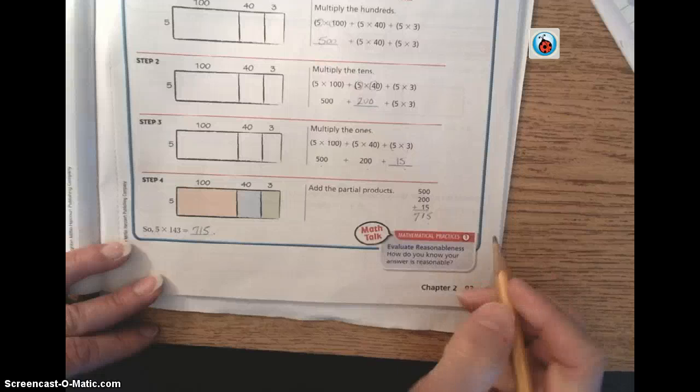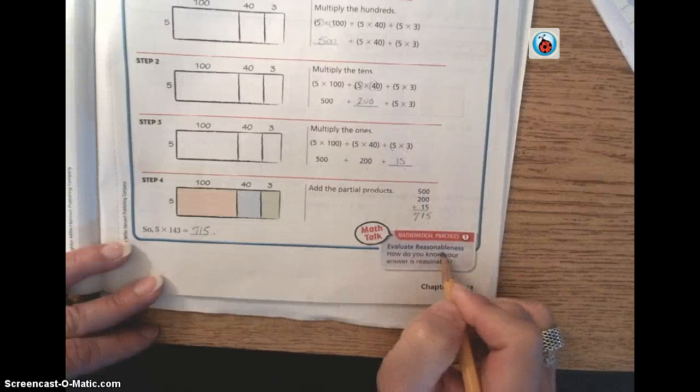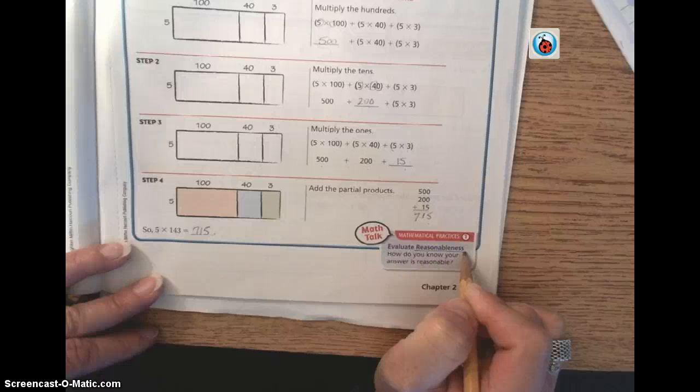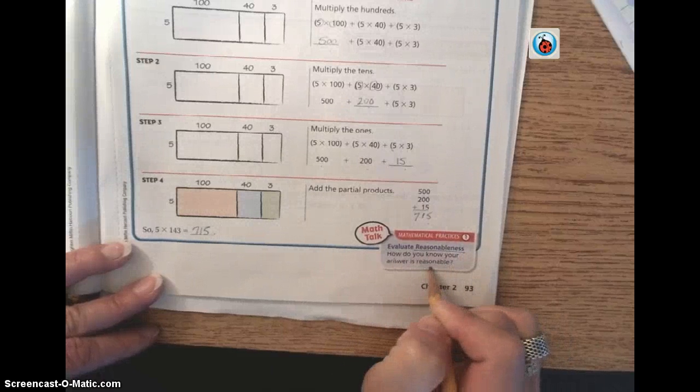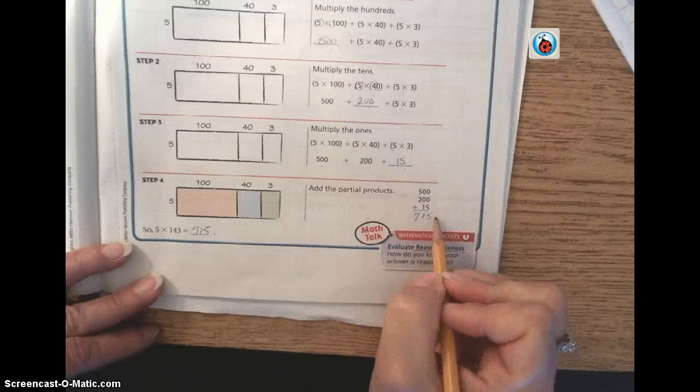It does have a math talk down here where it wants you to evaluate reasonableness, and we know that if it asks us about reasonableness, we're going to have to do some form of estimation. So how do you know your answer is reasonable? Well, we know that if we take 715...